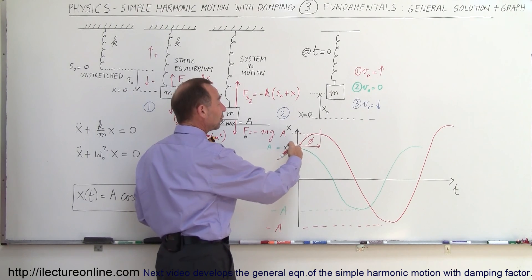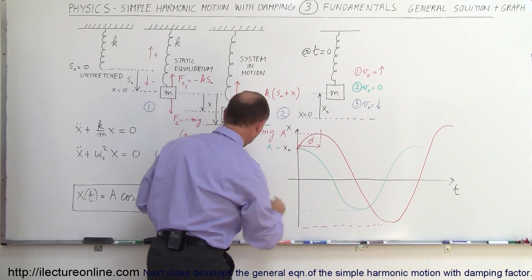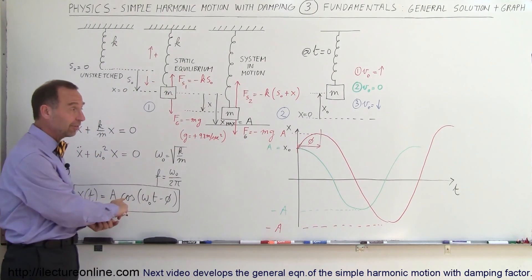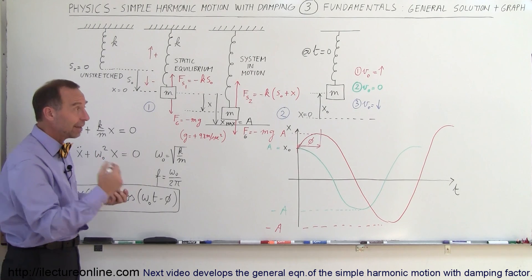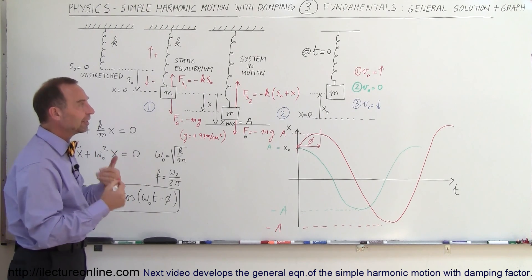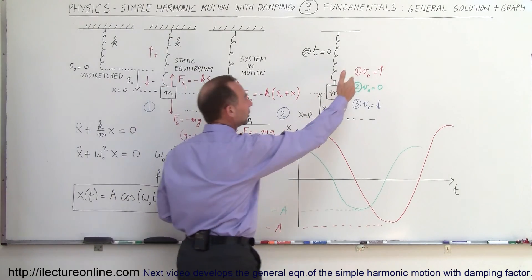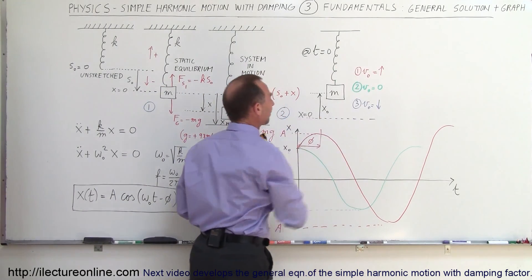Notice that in this case you would have a greater amplitude, the frequency would not be different, the frequency would be the same because you have the same k and the same m. You just would have a different initial condition when the object would be moving upward at that particular time.